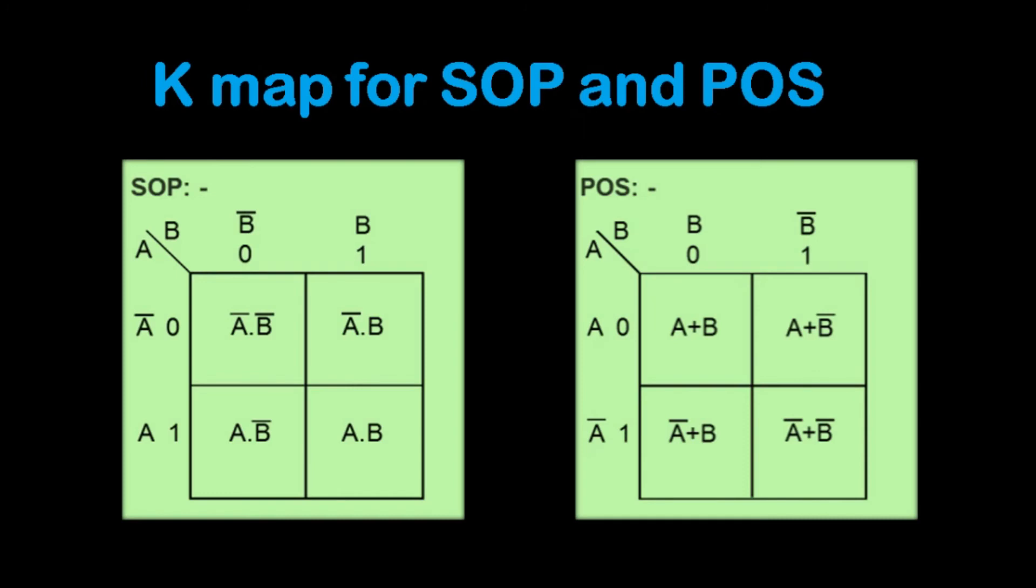K map are sum of products and product of sums. So AB are the input variables, B dash B and A dash A. And in boxes I have filled the values. So the first box is A dash B dash, second one is A dash B. Next in vertical one A B dash, and last value is AB.